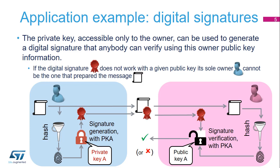Person A can prepare a signed message by first performing a secure hashing function on it, then encrypting the resulting digest using their private key. The resulting signature is sent alongside the message to Person B. Person B can verify A's signed message by performing the same hashing function on it, then using the result when performing the signature verification function using A's public key. The result of the verification function will determine if the message is genuine or not.